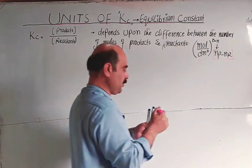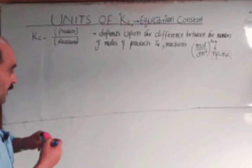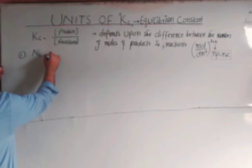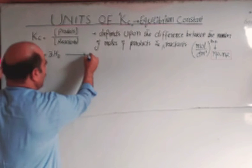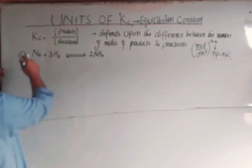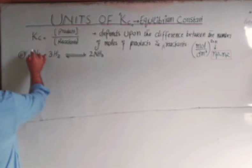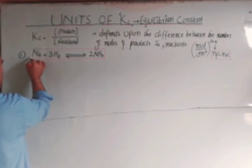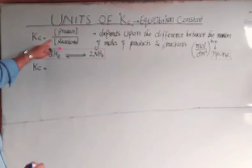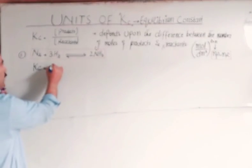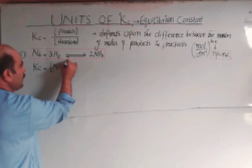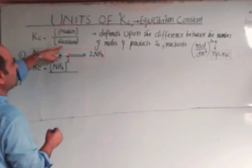Students, we have three examples of different types. Example number one: nitrogen gas combined with hydrogen gas forms ammonia in the forward direction, and in the reverse direction ammonia breaks back into nitrogen and hydrogen. This is a reversible reaction. At the equilibrium state, the equilibrium constant Kc equals the concentration of products — ammonia — raised to the power of its coefficient, two.